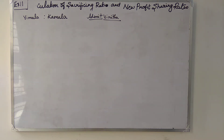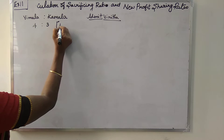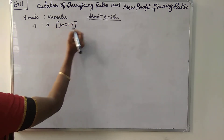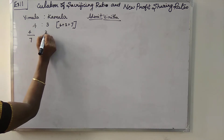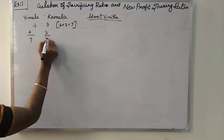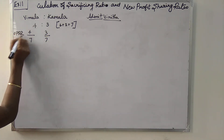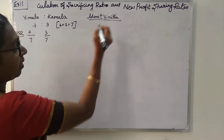The given ratio is 4:3, so 4 plus 3 equals 7. The old profit sharing ratio is 4/7 for Vimala and 3/7 for Kamala. This is the old profit sharing ratio for Vimala and Kamala.